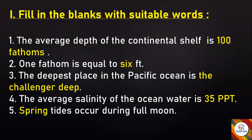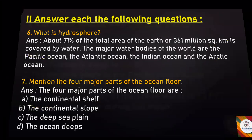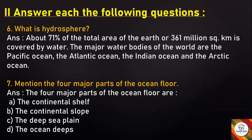Now let's move to the next section: Answer each of the following questions, continuing from question number 6. What is hydrosphere? Answer: About 71 percent of the total area of the earth, or 361 million square kilometers, is covered by water. The major water bodies of the world are the Pacific Ocean, the Atlantic Ocean, the Indian Ocean, and the Arctic Ocean.